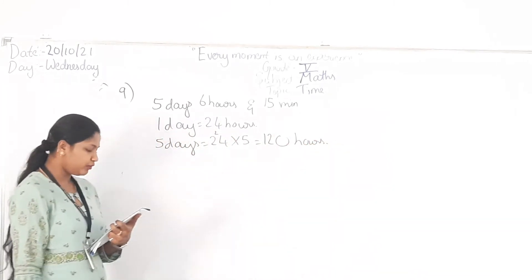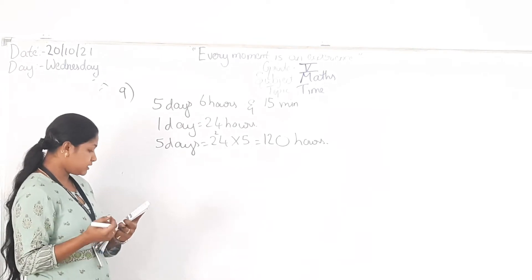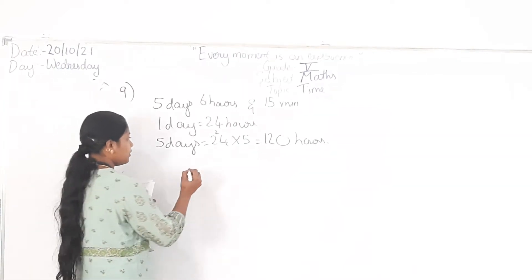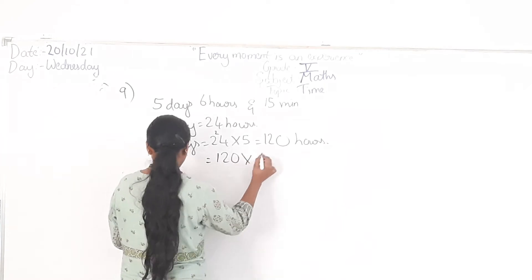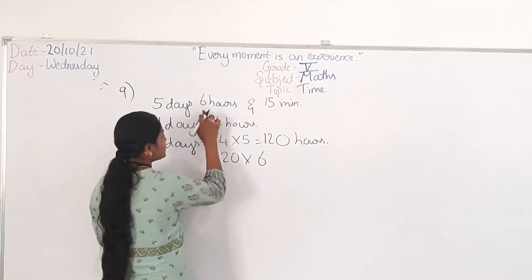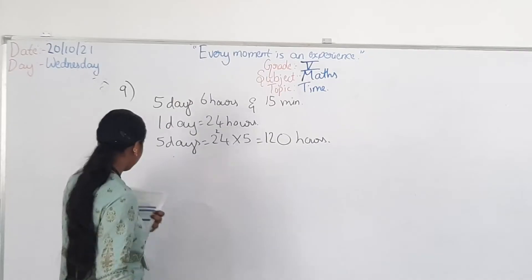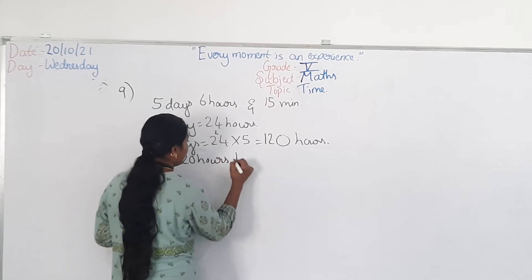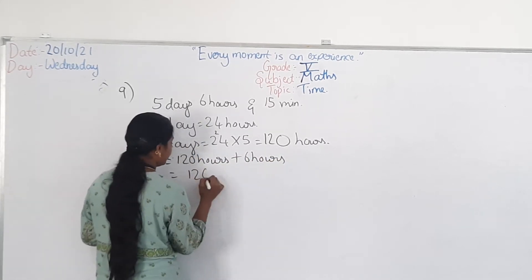5 days equals 24 into 5 will be 120 hours. For 5 days you found the hours. Then, to convert this into minutes, what do you do? 120 into 6, sorry, you have 6 hours also. Now add this. That is 120 hours plus 6 hours. So, that will be 126 hours.